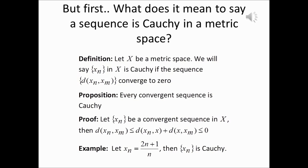To show convergence to 2, we consider the ordinary distance between the n-th term of the sequence and 2. By definition, this is simply the absolute value of (2n + 1)/n minus 2. Simplifying the term inside the absolute value, we get 1/n. So in the limit as n goes to infinity, the ordinary distance between the n-th term and 2 goes to zero.